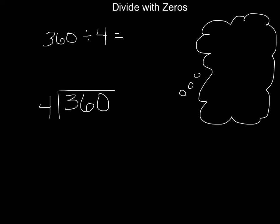So I see inside of this, first off, a 36 and a 4, and that pings in my head — oh, there's a fact family there. I want to remember: 4 times 9 is 36, so I have a feeling that's going to help me out.